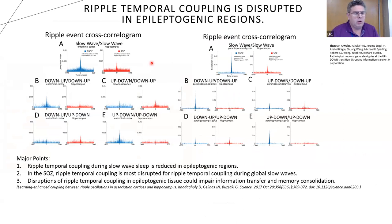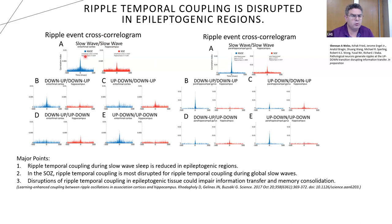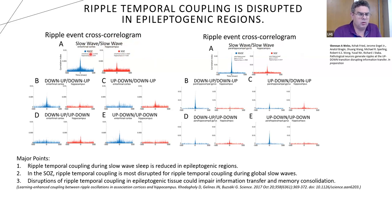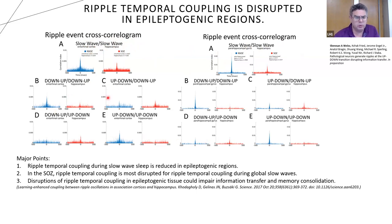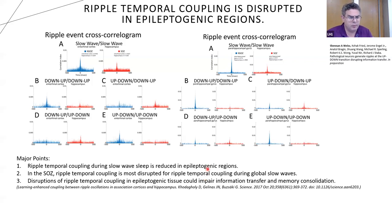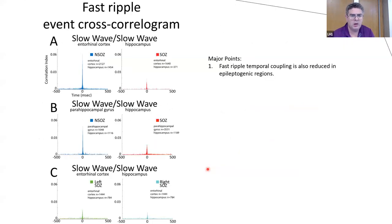Ripple-temporal correlations are thought to be important in memory consolidation and information transfer. To study this in patients with epilepsy, ripple-event cross-correlograms were examined between the entorhinal cortex and hippocampus and parahippocampal gyrus and hippocampus in both the seizure-onset zone and non-seizure-onset zone. Ripple-temporal correlations were significantly reduced in the seizure-onset zone, mediated by global rather than local slow waves. This disruption of ripple-temporal coupling may impair information transfer and memory consolidation, consistent with known memory consolidation deficits in epilepsy patients. A similar finding was observed for fast ripples.